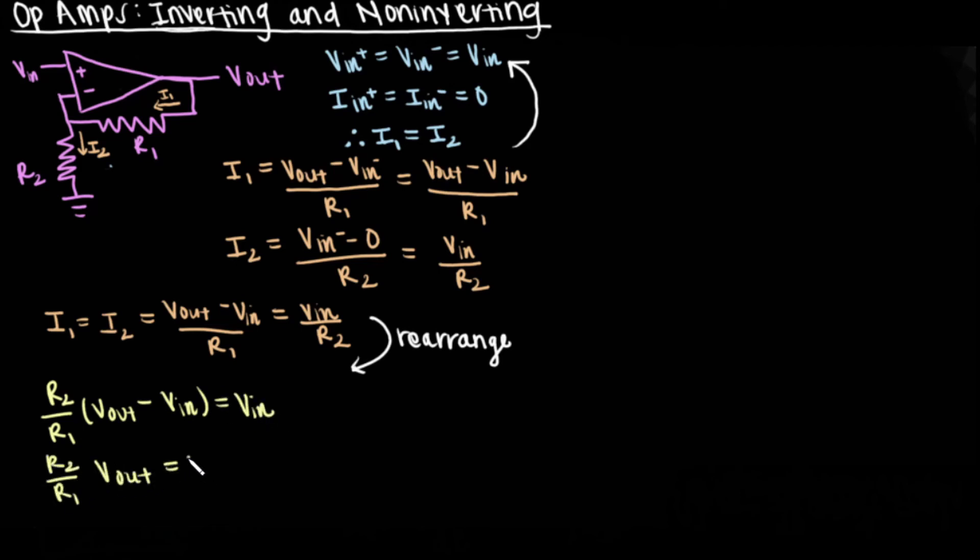Rearranging, we multiply each side by R2. We then move VN components to one side. Finally, we multiply by R1 divided by R2 to both sides. The result is Vout equals VN times R1 divided by R2 plus 1.